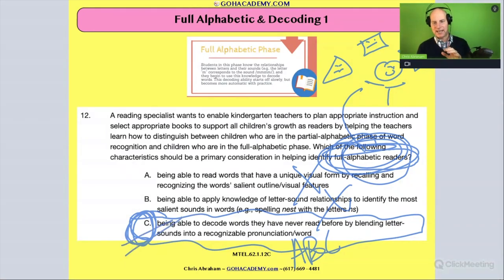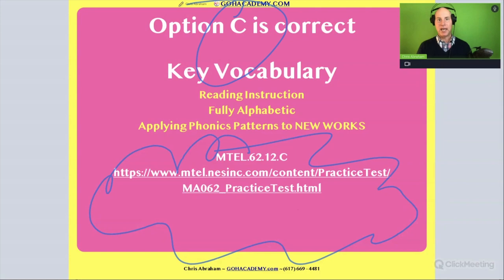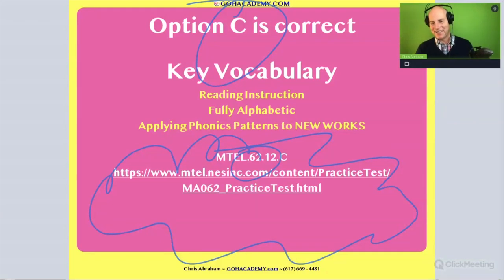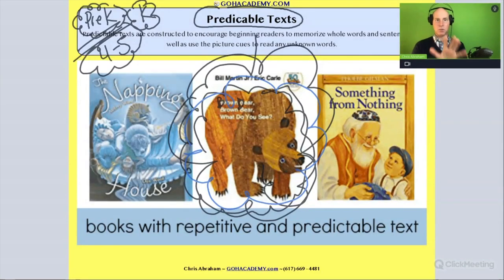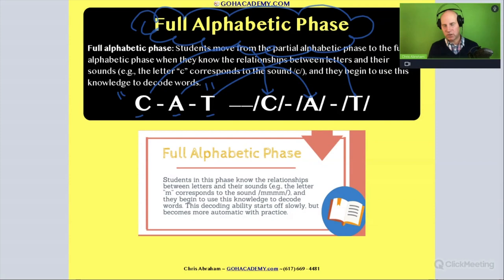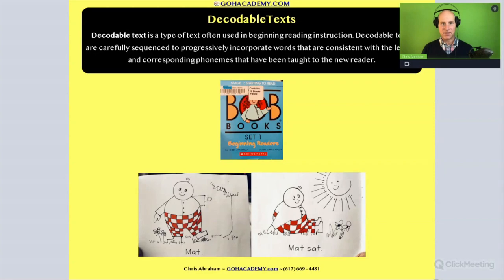The answer is C. This is a push question from the reading specialist exam — a good one to practice with. Now, we've talked about how predictable text is appropriate for partial alphabetic and pre-alphabetic students. Since fully alphabetic students are using the alphabetical principle and starting the decoding process, it's probably suited for a decodable text. So let's do a case study on that.